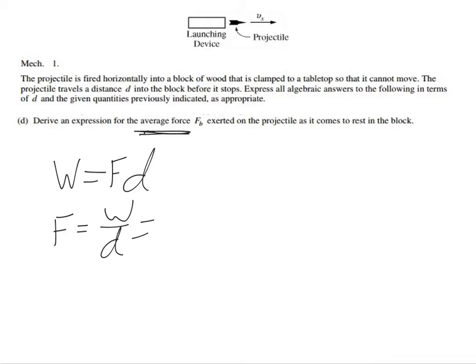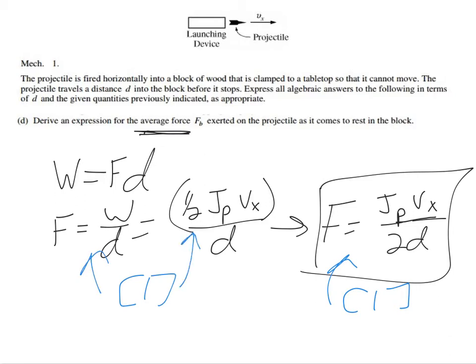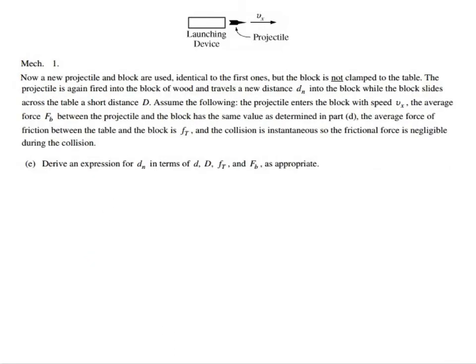All right, moving on. Derive an expression for the average force exerted on the projectile as it comes to rest in the block. This is where you want to actually use work equals Fd. In the previous part, you didn't actually know what the force was. Here though, it makes a lot more sense. So you do force equals work over distance. We already know what the work was - it was one half J_p over v_x divided by distance. So the force needed to stop this block would end up being J_p v_x over 2d.